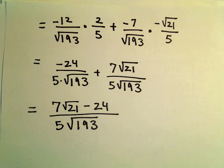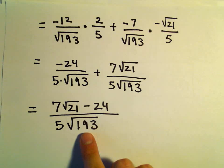Let's put the positive part first: 7 square root of 21 minus 24 over 5 times the square root of 193. Now just sort of this 193 factor. Off the top of my head, it certainly could. So 3 doesn't go into it—3 would go into 180 but not 193.